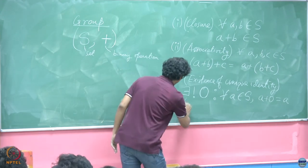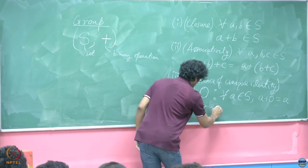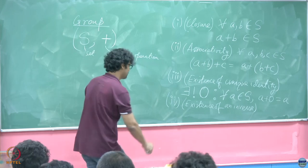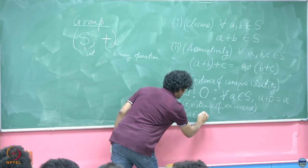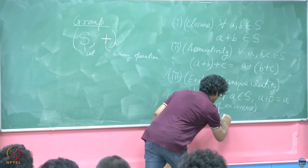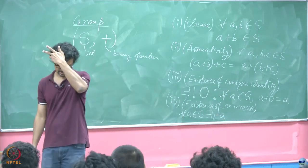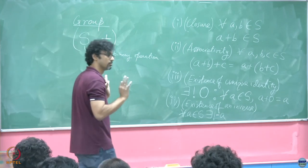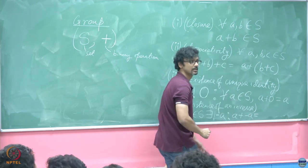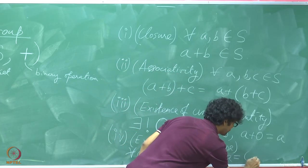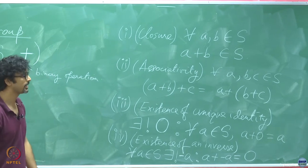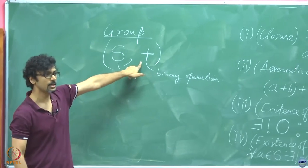The fourth, existence of an inverse. What it means is, for all A belonging to S, there exists a unique identity element - minus A, this minus should not be read as the negative of the number essentially, it is just a placeholder, a symbol - such that A plus minus A gives you back the additive identity or in this case, the identity. If these four properties are held together, we call such a set with this operation to form a group.